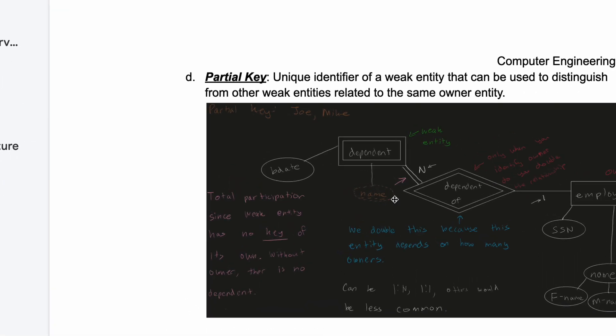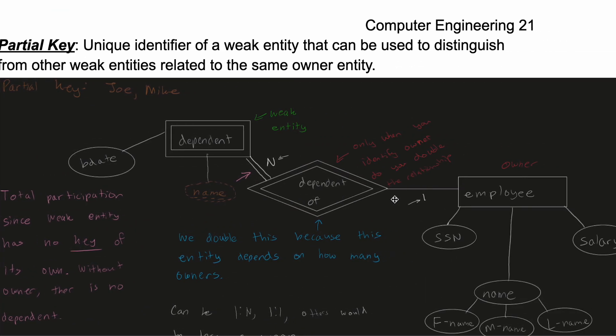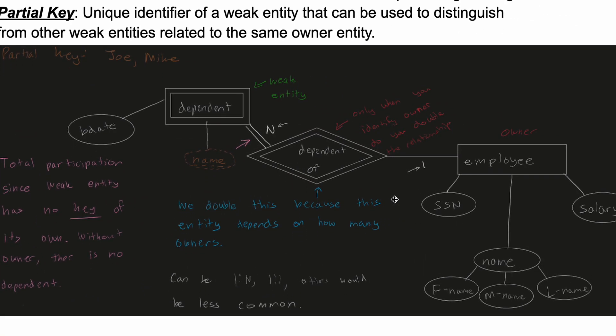We are going to have some owner entity and then we're going to have a weak entity connected to it. To the right we see that we have our owner right here, it's an employee. They have these attributes like a SSN, this should be underlined because it's a key, they have a salary and name, first name, middle name, last name.